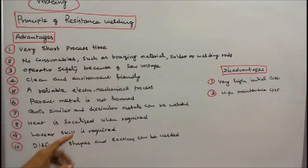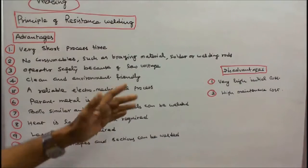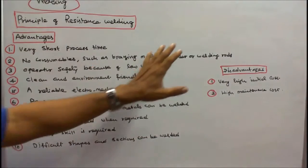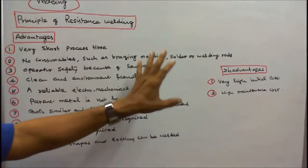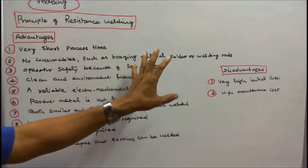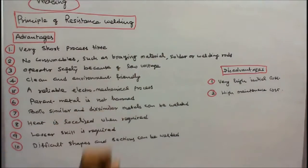Number nine, lesser skill is required. Number ten, difficult shapes and sections can be welded. Disadvantages: number one, very high initial cost. Number two, high maintenance cost.